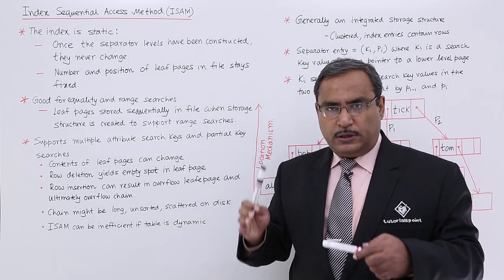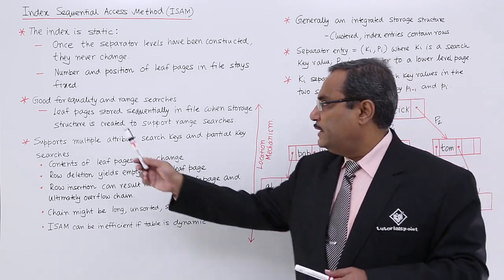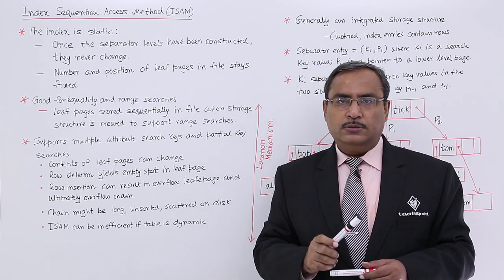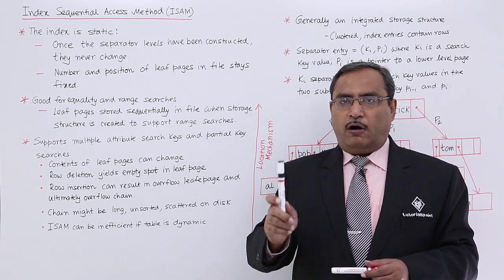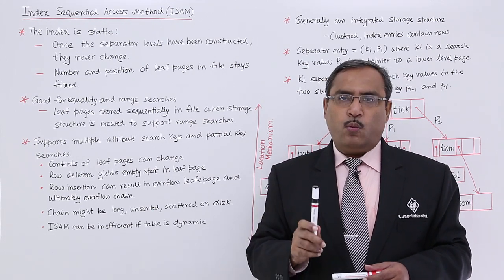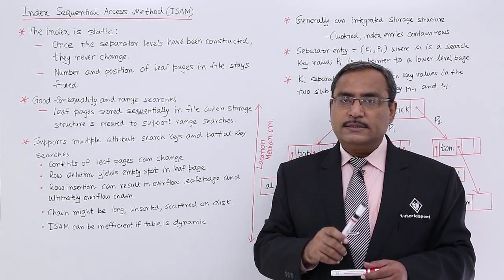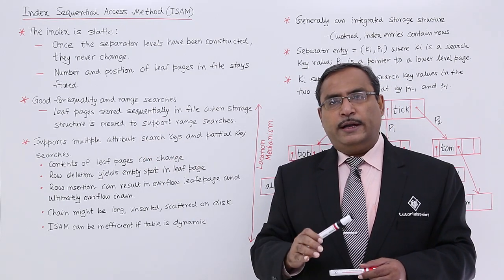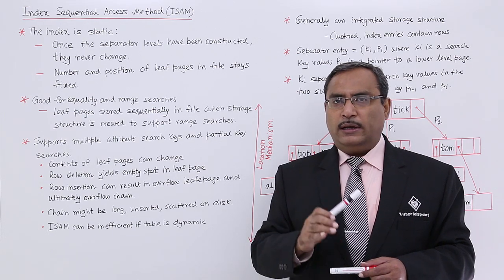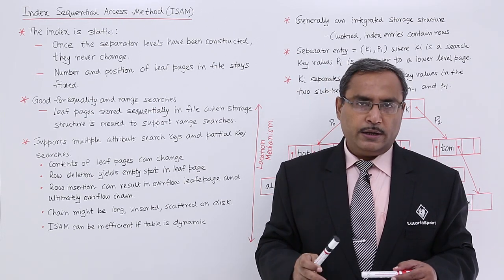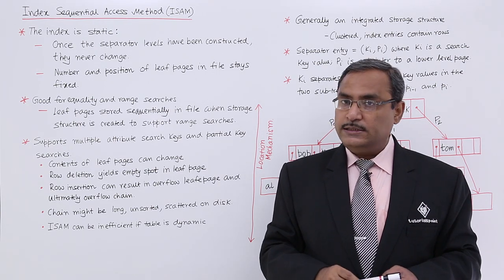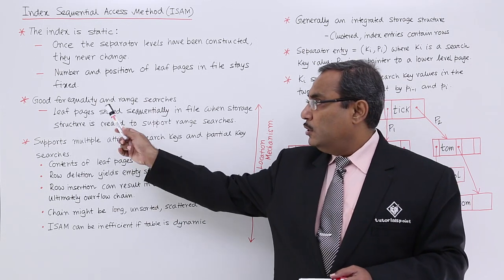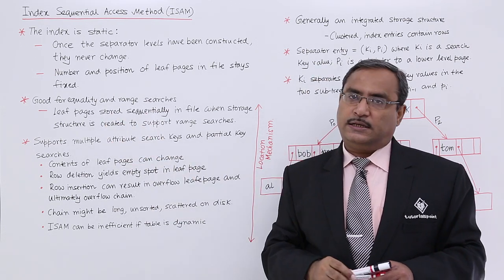Now, this particular data structure is good for equality and range searches. What is the equality search? I want to find out the age of a certain employee having employee ID 1234. That is known as the equality search. What is the range searches? That means, I want to get all employee details having employee ID ranging from 100 to 200. That is known as the range search.